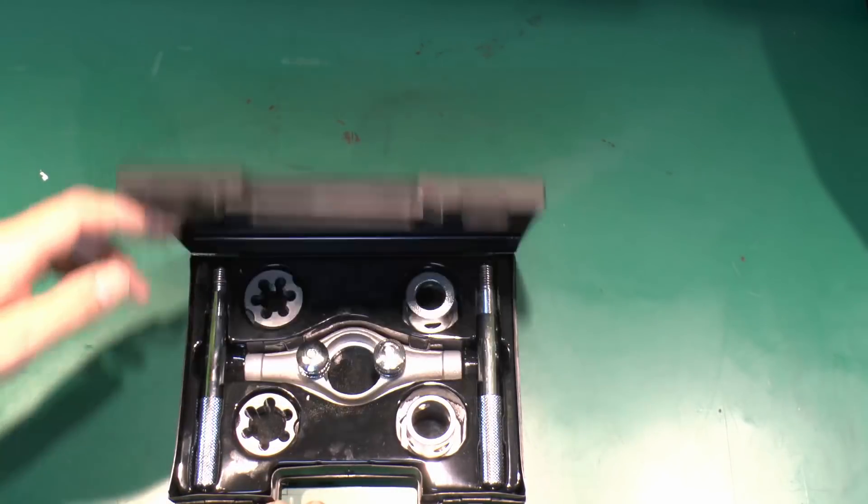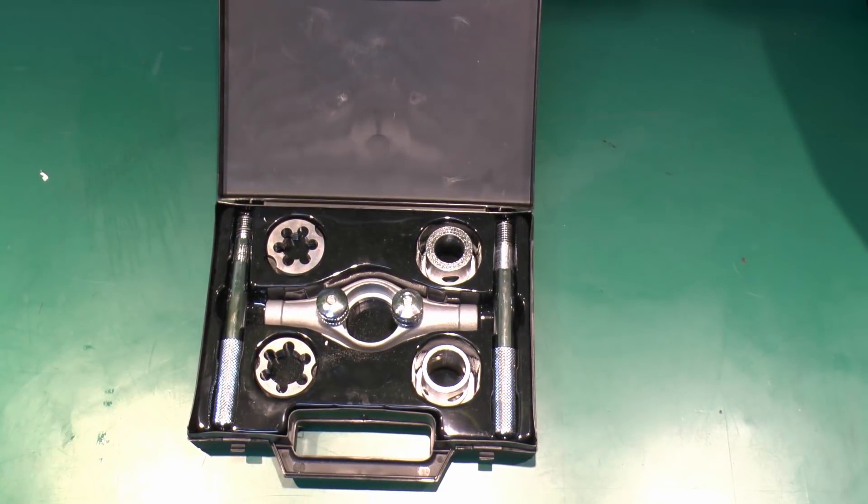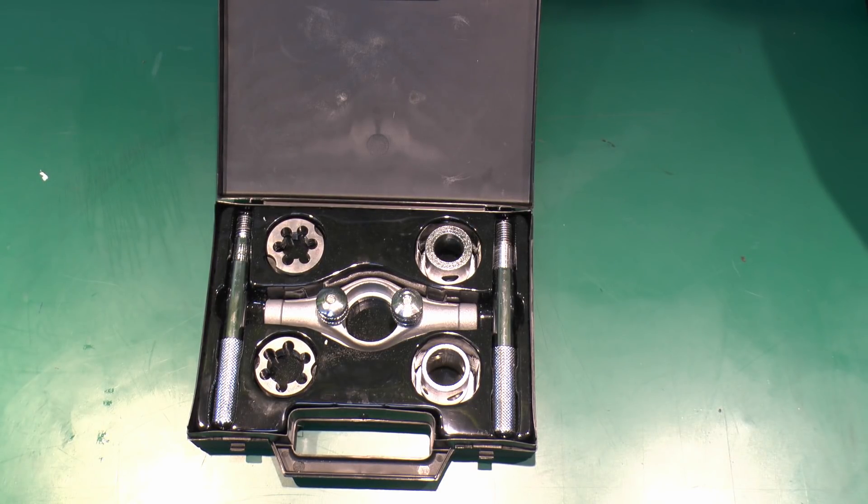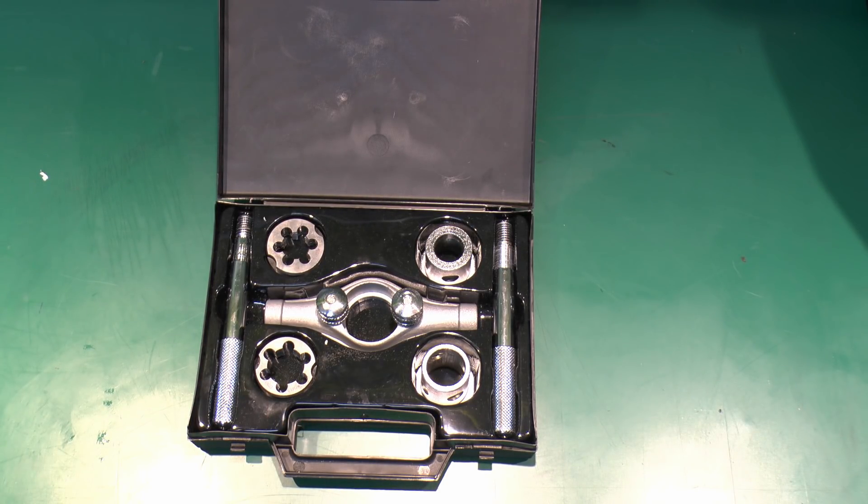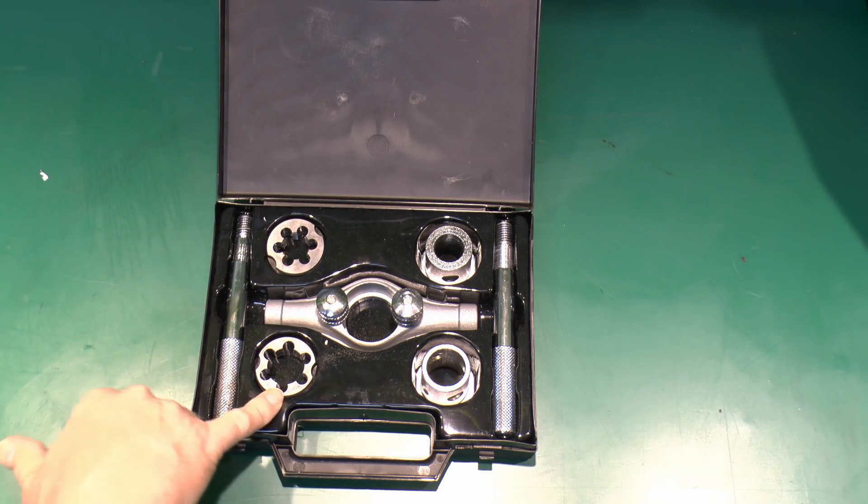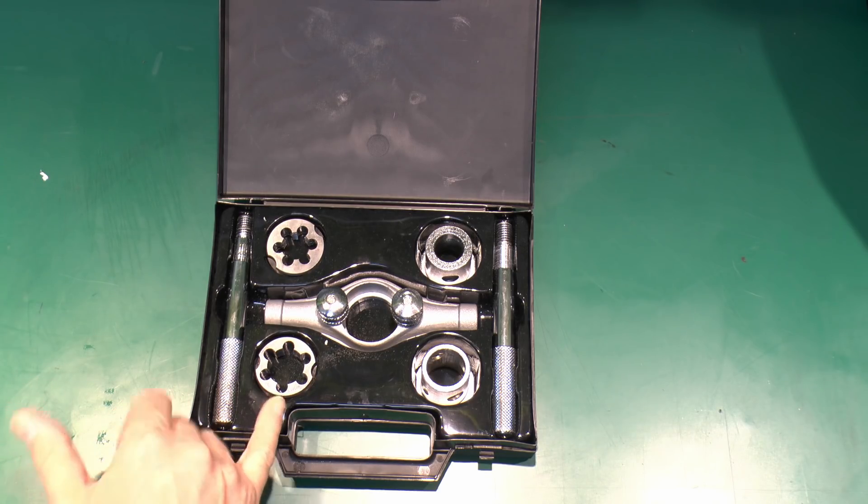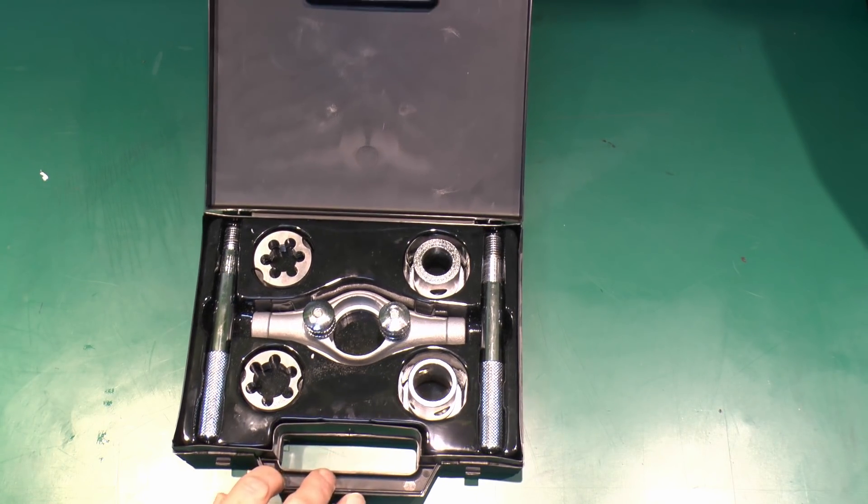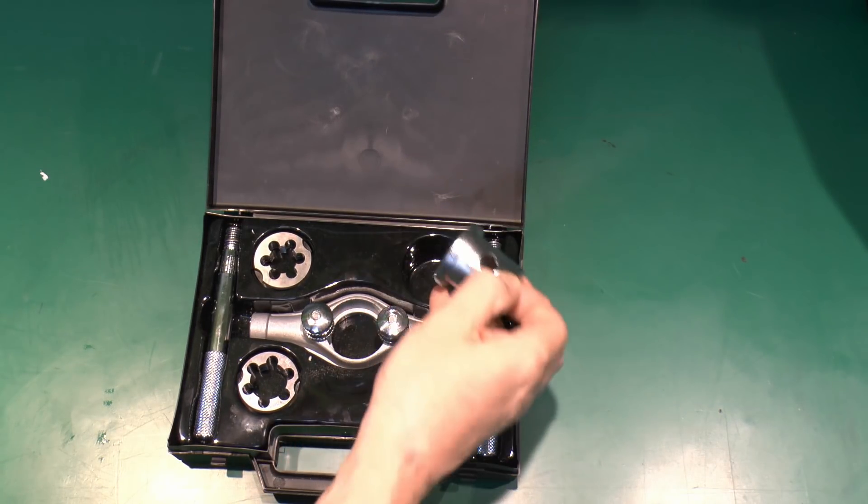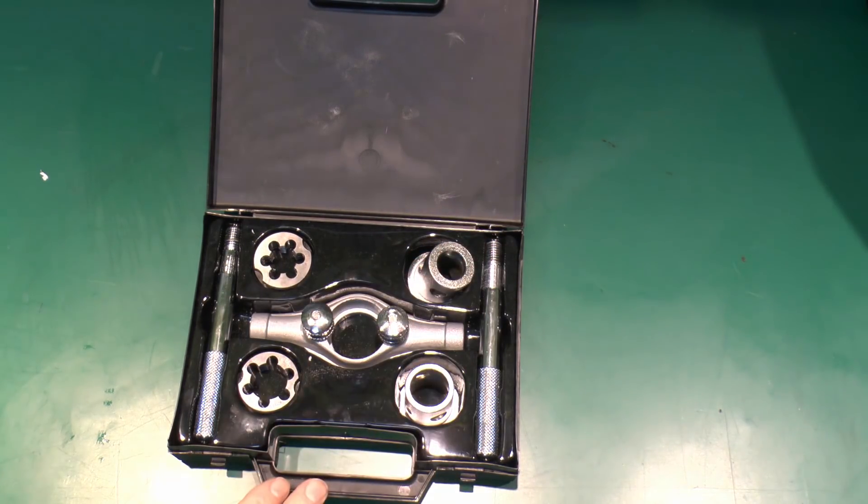Now, once you've cut the actual stuff, you need to put a thread on the end, and for that you'll need a threading set. Here's a fairly typical example. These are available in a variety of sizes, but as we saw in the last episode, the most common sizes are 20 and 25 millimetres, and typically a set for this will have both sizes in. If you want to do 16, or the larger 32, and so on, then you'll need to buy a separate set for those.